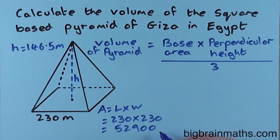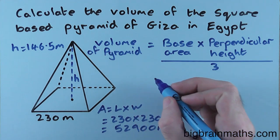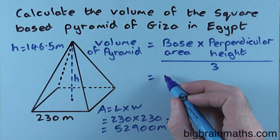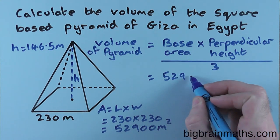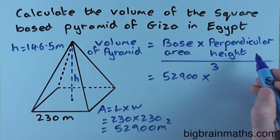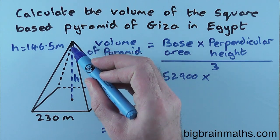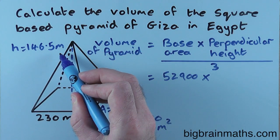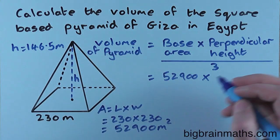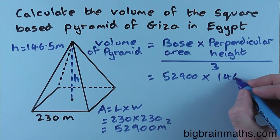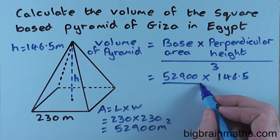Now that we've worked out the base area, we can calculate the volume of the pyramid. We need to do the base area, which is 52,900, multiplied by the perpendicular height. The height of the pyramid of Giza is 146.5 meters, so we're multiplying by 146.5 and all of this is divided by three.